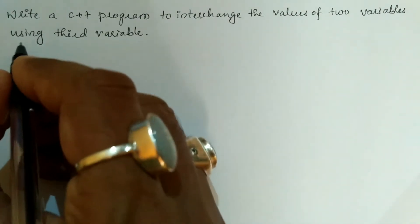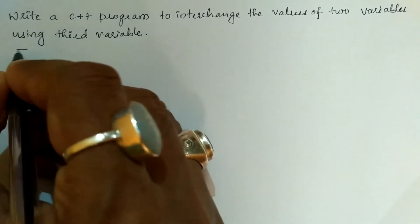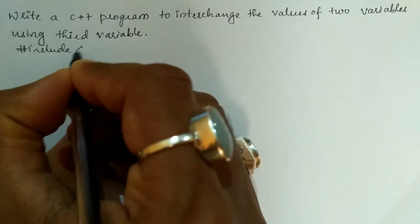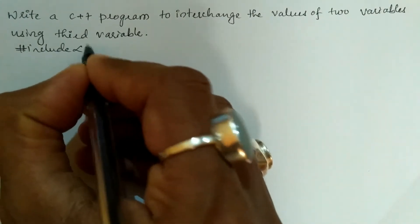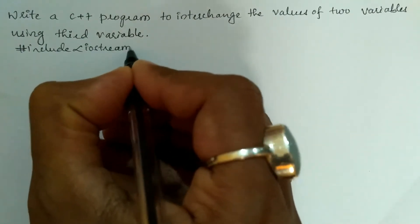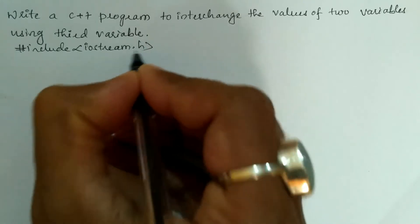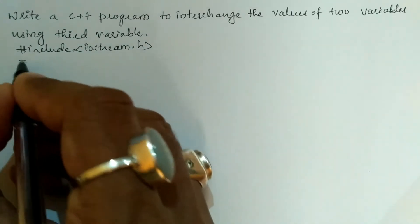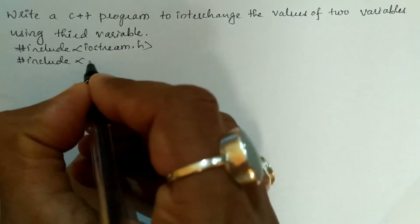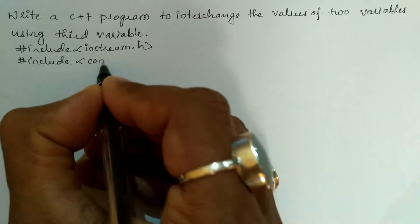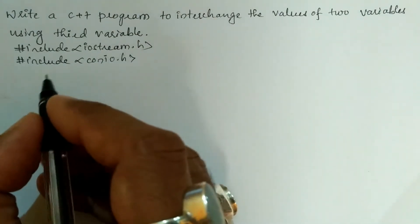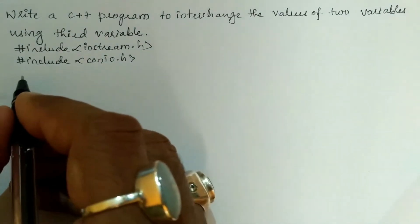Let us write the preprocessor directives. Hash include in angular braces we will write iostream.h header file, and the next preprocessor directive is hash include in angular braces we will write conio.h header file.